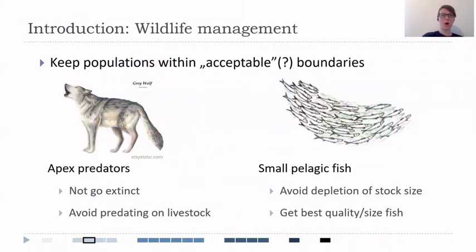What we actually want to do is keep the population within acceptable boundaries. But what are acceptable boundaries? That depends on our interest in the species, benefits we get from it, its interaction with humans, and its interaction with other organisms.